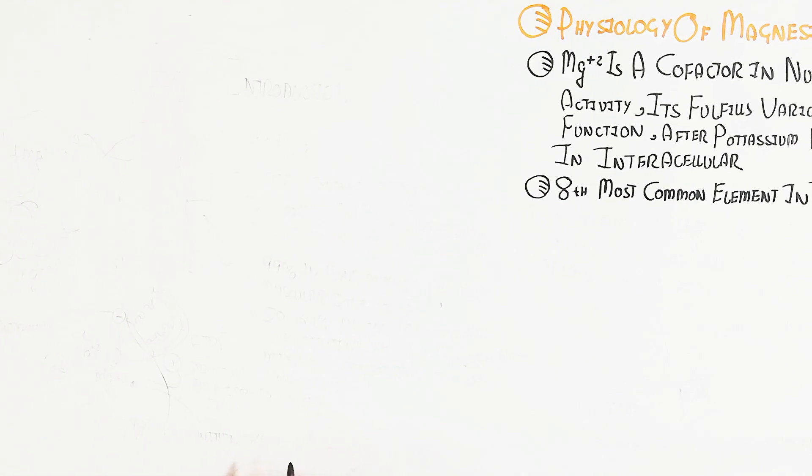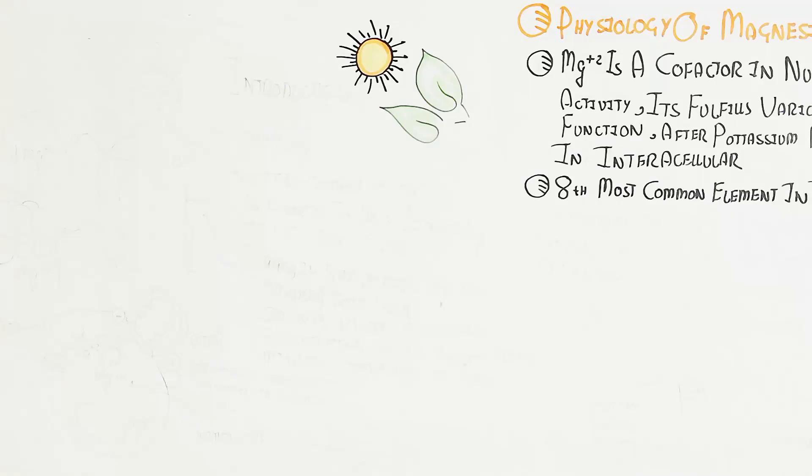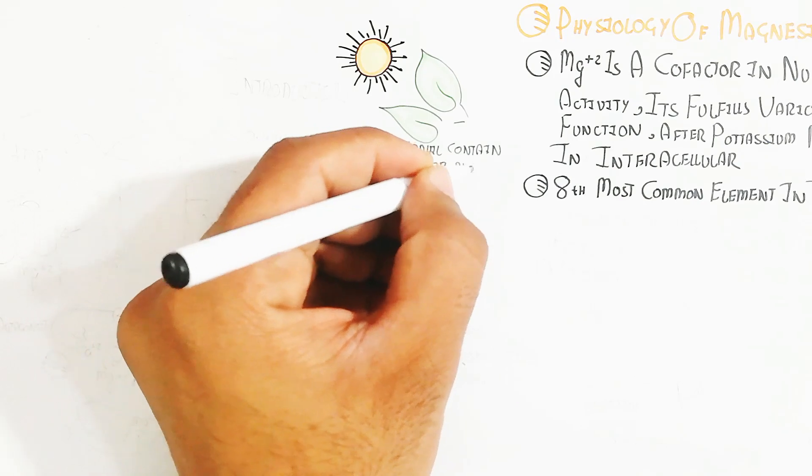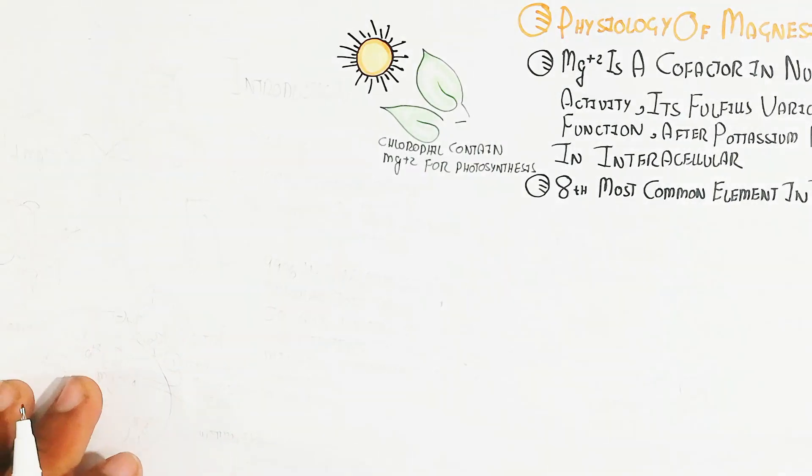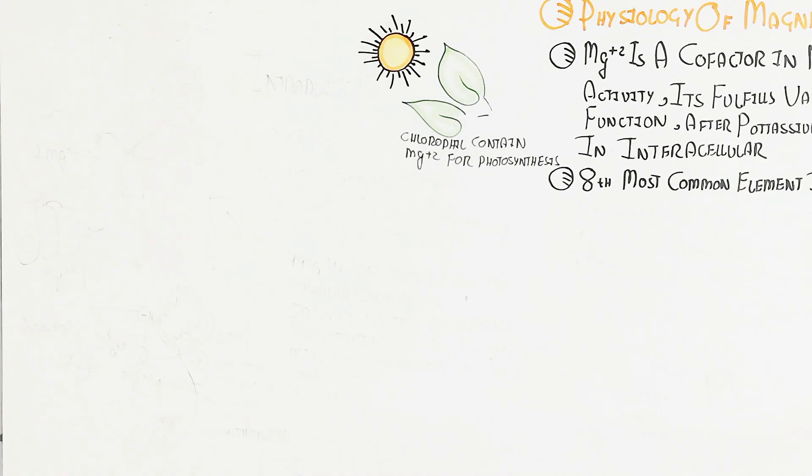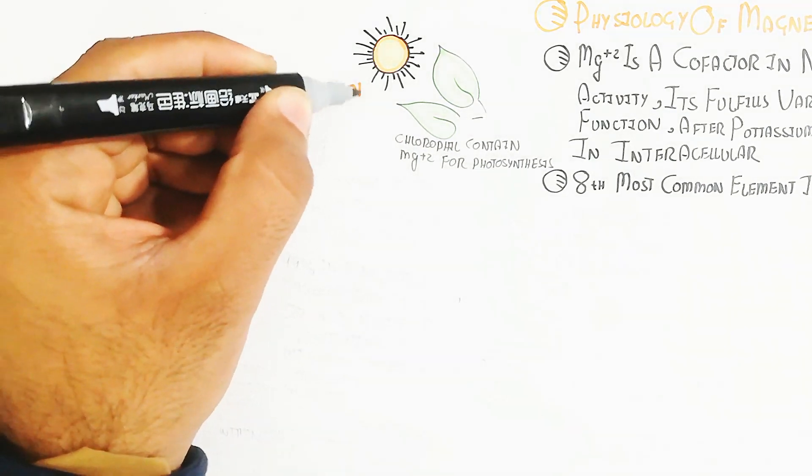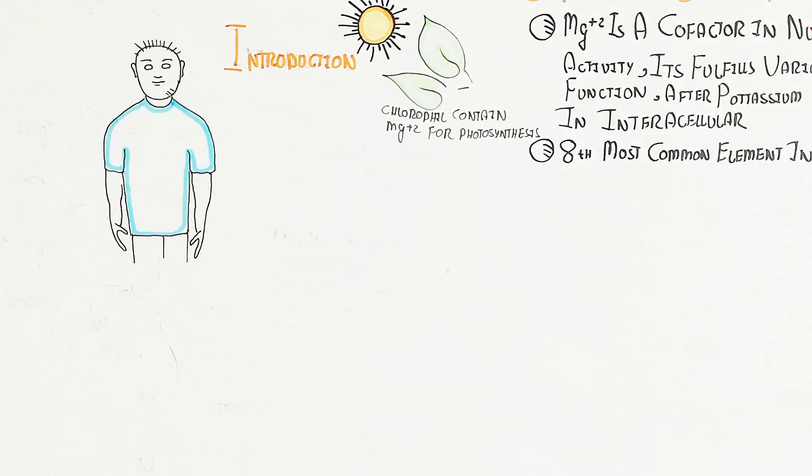Chlorophyll contains magnesium for photosynthesis, so green vegetables contain a lot of magnesium, along with other green fruits.